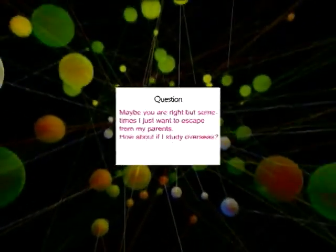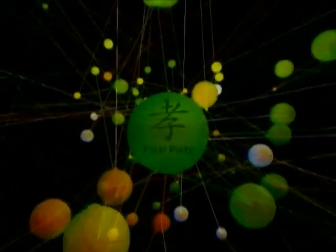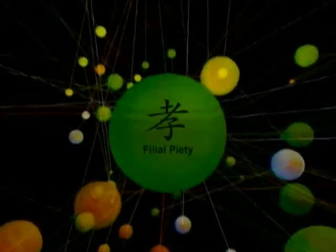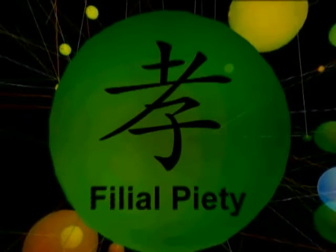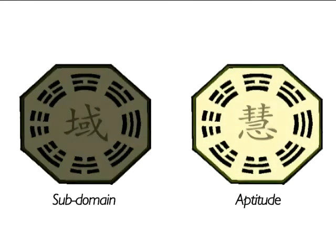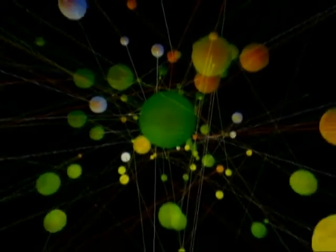Based on the question asked, virtual Confucius identifies the yi, the relevant sub-domain of knowledge in the Analects. The system then further queries the user to determine his hui aptitude on that topic. According to yi and hui, virtual Confucius then replies to the user.